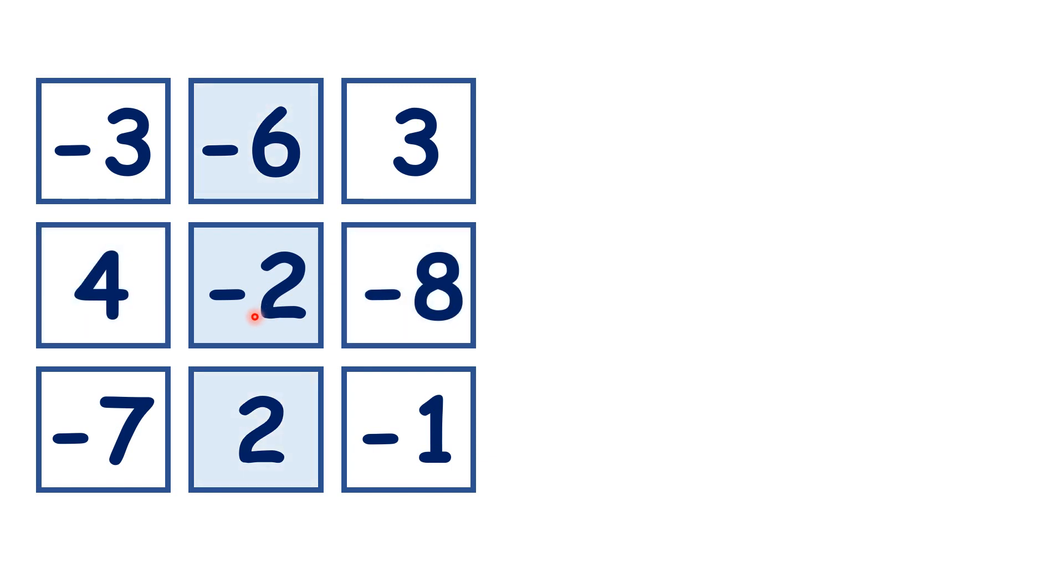For this diagonal, minus 7 is 5 less and 3 is 5 more. And for this diagonal, minus 3 is 1 less and minus 1 is 1 more.